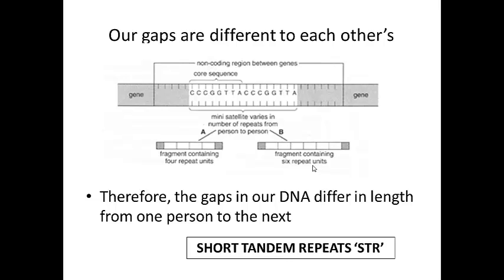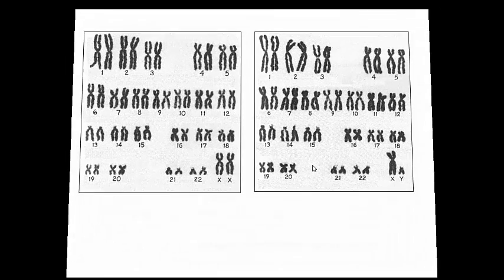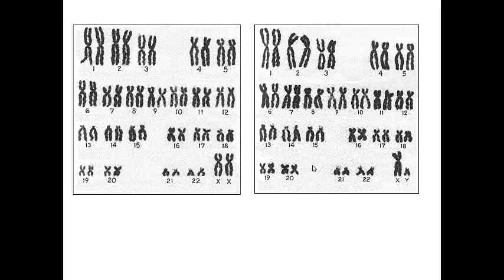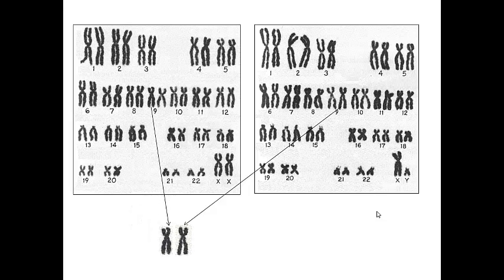Therefore, the number of STRs varies between people without selection. How many STRs do you have? This is determined by your parents. You'll get one chromosome number 9 from your mother and one chromosome number 9 from your father, giving you your diploid karyotype. Which chromosomes you inherit from your mother or your father is random.